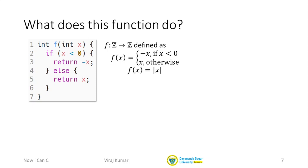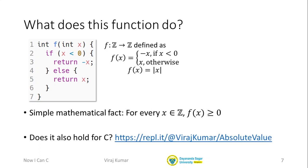This is the absolute value function. So f(x) is absolute value of x. So that's easy enough. Now it may not surprise you that once again there is a difference between C and mathematics. So although this statement is obviously true that for any integer x, f(x) is greater than or equal to zero, you may find that that's not true for C.